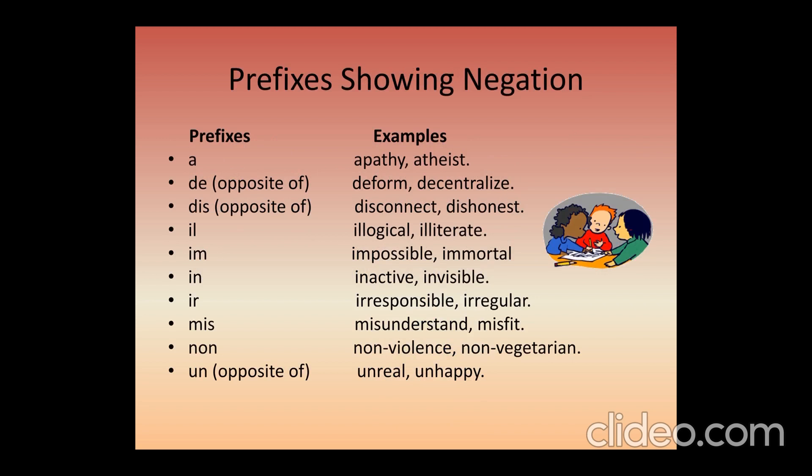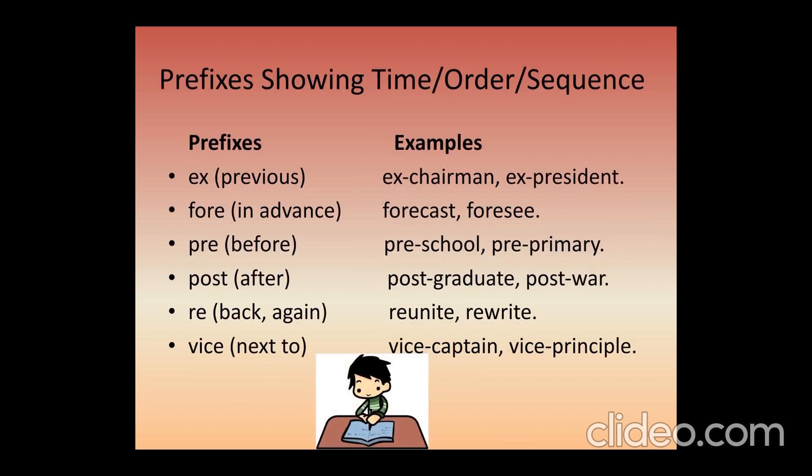Here is a list of prefixes that help us in forming a negative: connect → disconnect, form → deform, pathy → apathy, logical → illogical, illiterate, impossible, irresponsible, misunderstood, non-violence. This is a prefix of negation.